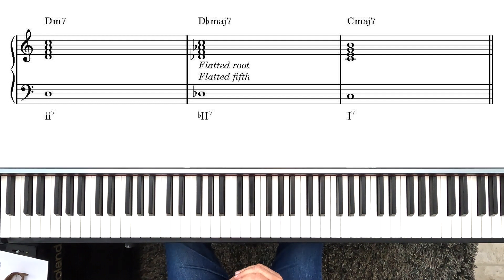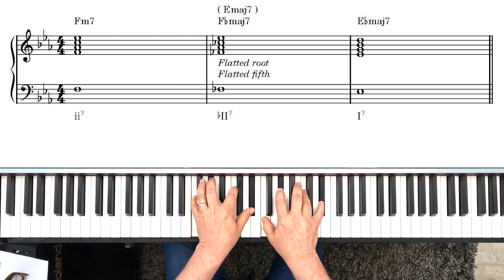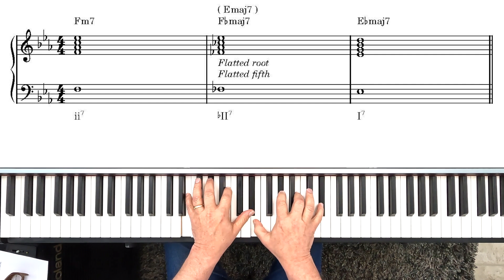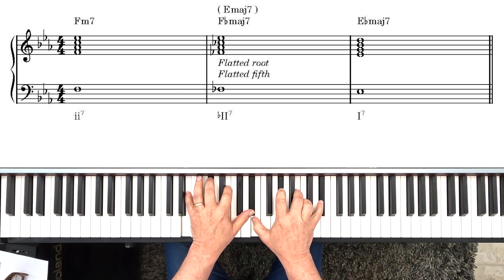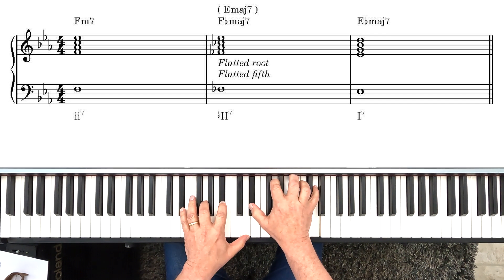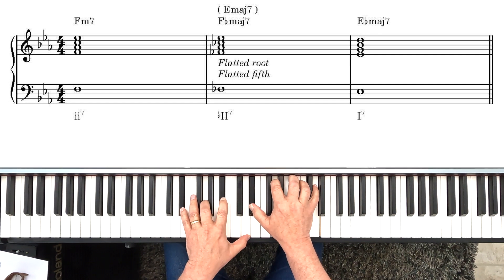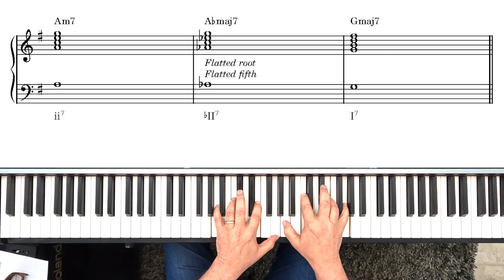Using our other two example keys, we have... Now we could call that F flat major 7, or we can call it E major 7. Either way. And that leads us directly to E flat major 7. Here it is in the key of G.